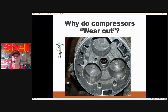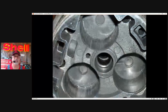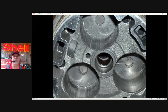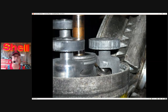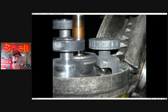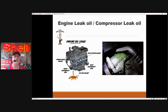Why do compressors wear out? Can you see all the metal shavings in here? Can you see all the scoring? The Teflon ring is non-functional — it's so badly scored. There's glitter — that's metal shavings — but what should be there is a coating of oil. Everything you see here should have a film of oil, but it doesn't. I wonder where the oil went. Just like an engine: engines leak oil, and compressors leak oil. You see that UV dye? That compressor's leaking.